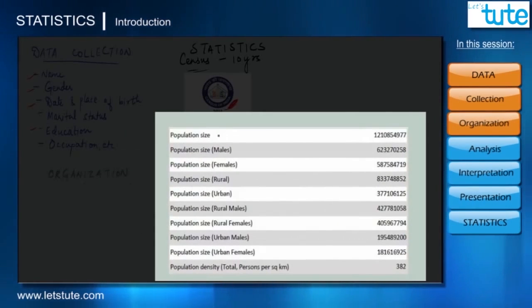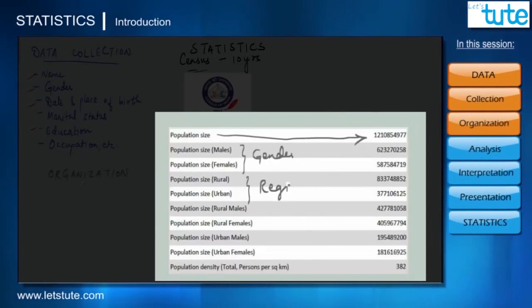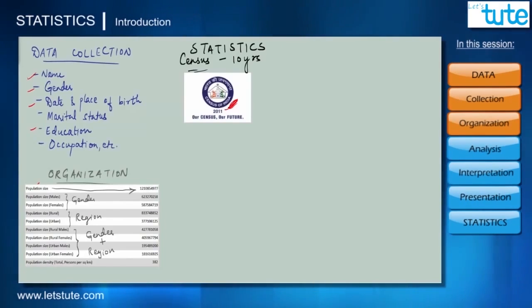For example, take a look at this data from the recent Indian census. We got data about the population size of India. Now we can further organize it in terms of gender or we can organize it in terms of region, rural or urban. Or we can go ahead and organize it in terms of both gender and region. So organization of data totally depends on what kind of data we are dealing with and what are the requirements of an individual.